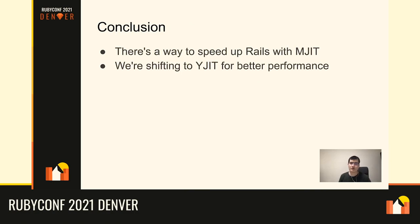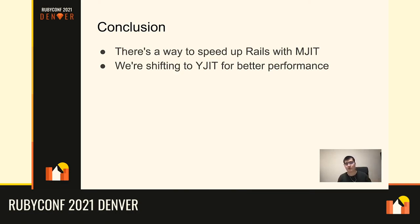In conclusion, I wanted to show there is a way to speed up Rails with MJIT, although you might see many benchmarks showing MJIT actually makes Rails slower. You need to be careful about a lot of things to make MJIT work faster than the interpreter. Finally, we are shifting toward YJIT for better performance — YJIT already achieves faster performance than MJIT, has more developers, and could be a better way to achieve better performance. Thank you for listening to my talk.